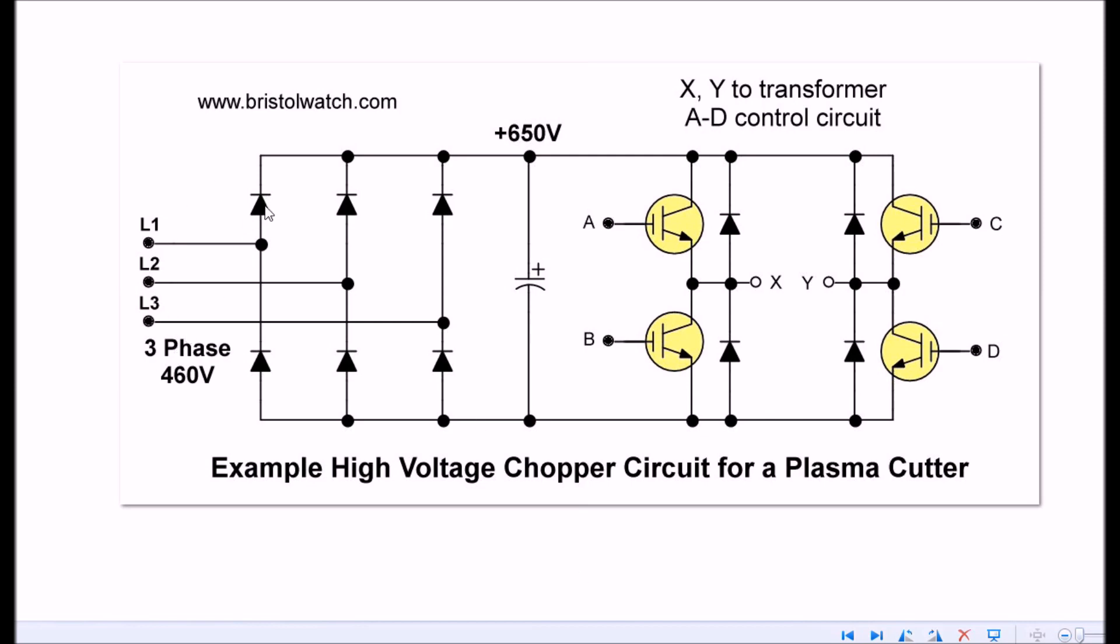Here's a circuit that I am very familiar with. It's a high voltage chopper circuit for a plasma cutter. We have a three phase input. These six diodes form a full wave bridge rectification function. This produces 650 volts across this cap. These IGBTs are used in a type of H-bridge configuration that switches the current path back and forth. It forms a square wave in itself. From that 650 volts DC, you have a 650 volt peak-to-peak square wave. X and Y goes to a step-down transformer which connects to the cutting head.